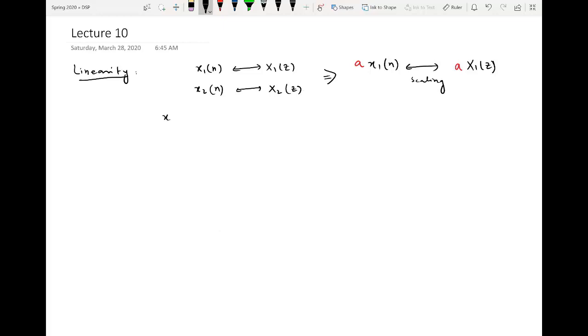What does superposition mean? It means that if we add these two sequences, x₁(n) plus x₂(n), then according to superposition, their corresponding Z-transforms will also be added up.